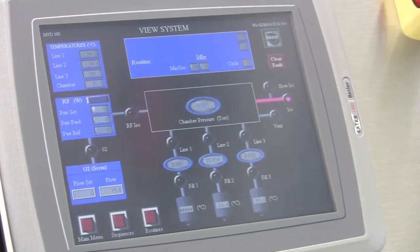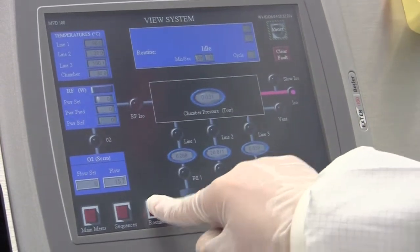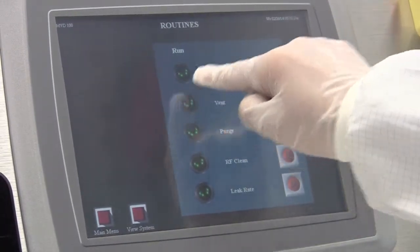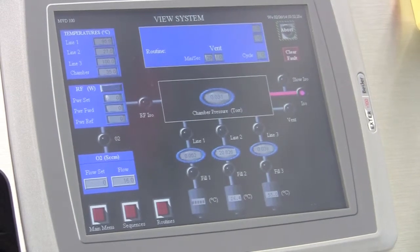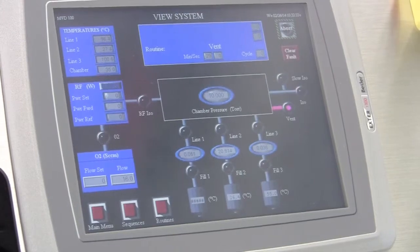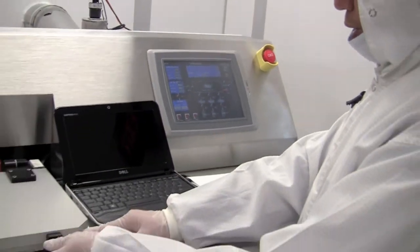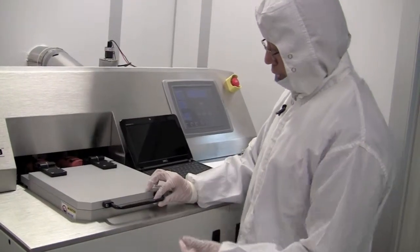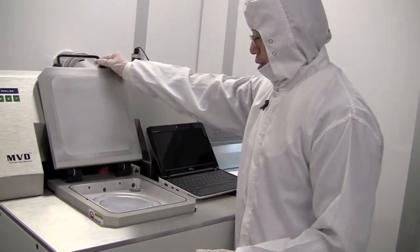When the system is at idle mode, we go back to the routines and vent the chamber. And the nitrogen will come in again to vent the chamber. We have to wait a little bit until we hear the hissing sound here. So we hear the hissing sound. Now we can open the lid to load the chamber.